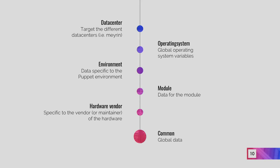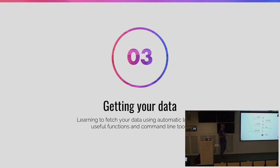The second part of the hierarchy is the one the config team mostly maintains. We have different levels: first the data center — so for a node in Meyrin we can set specific data different from Geneva. Then the operating system, environment module (which we'll discuss later — it's a hack we implemented), and the module. Finally, we have the hardware vendor and the common data, which is applied by default to all nodes unless overwritten anywhere else in the hierarchy.